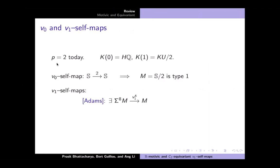By the Hopkins-Smith theorem, the Moore spectrum is type one and should admit a V1 self-map. Adams showed in his J(X) paper that the Moore spectrum admits a V1 self-map, which I'm calling V1 to the fourth — meaning it induces multiplication by the fourth power of the Bott element in complex K-theory. So V1 is the Bott periodicity element.